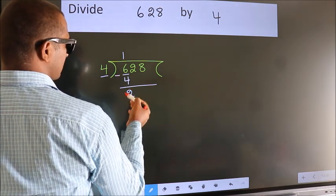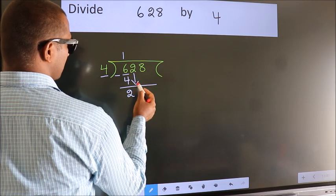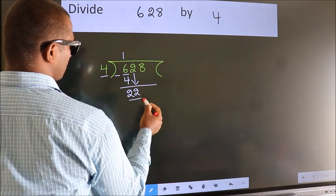After this, bring down the beside number. So, 2 down. So, 22.